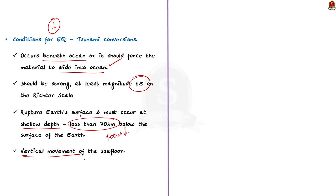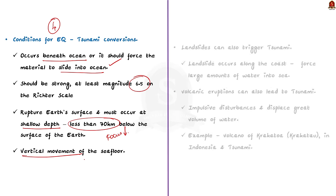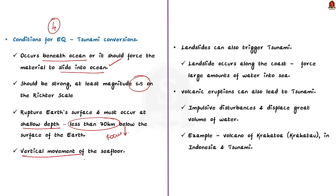Landslides can also trigger tsunamis. When a landslide occurs along the coast, it forces large amounts of water into the sea, disturbing the ocean and creating a tsunami. Moreover, underwater landslides can also result in tsunamis.